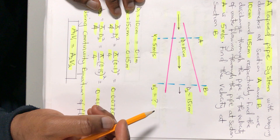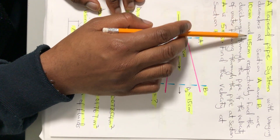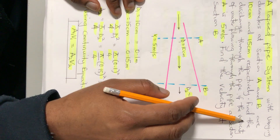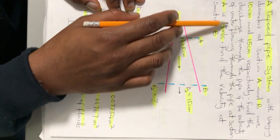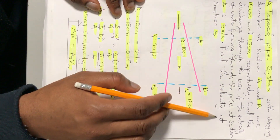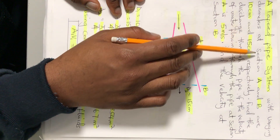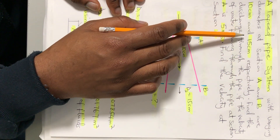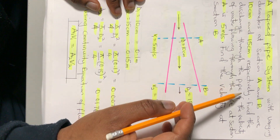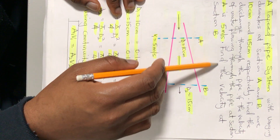Let's read out the question. We have a taper pipe system with varying diameters at section A and B of 10 centimeters and 15 centimeters respectively. Find the discharge through the pipe if the velocity of water flowing through the pipe at section A is 5 meters per second. Also find the velocity at section B.